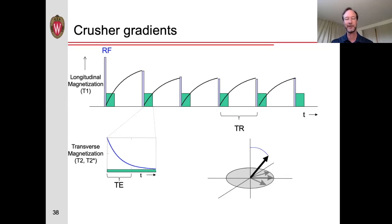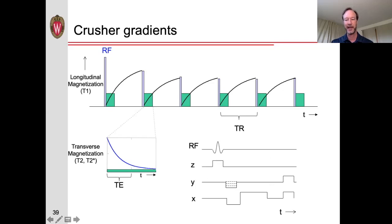And so one way to deal with this additional signal is to apply what are called crusher gradients. That is, after we've acquired our data, we apply additional gradients at the end of the sequence to remove any transverse magnetization. Then we can go on with our typical imaging. You'll also see that these crusher gradients play a role when we're doing certain kinds of preparation pulses.